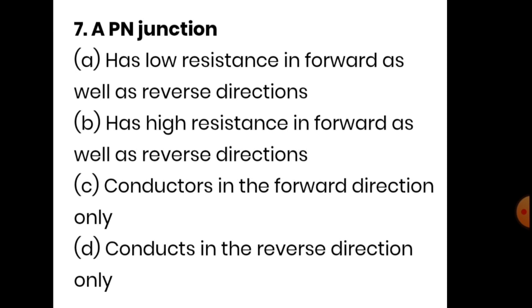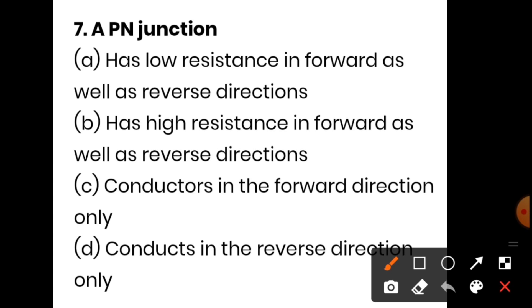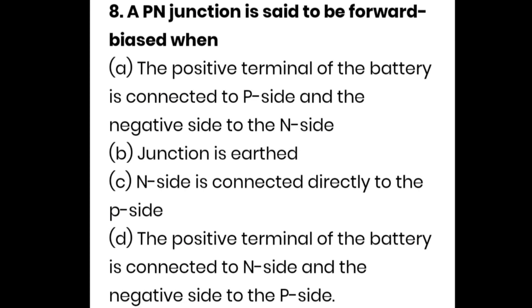The seventh question: a PN junction has low resistance in forward as well as reverse bias; option B — high resistance in forward as well as reverse bias; option C — it conducts in forward direction only; option D — conducts in reverse direction only. Options A, B, and D are not correct. Option C is the correct answer — a PN junction conducts in the forward direction only.